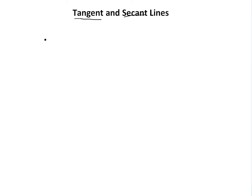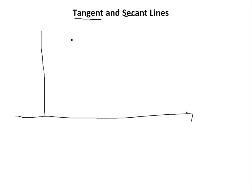We're going to look at tangent lines — I'll just show you what this is. Let's start off with just a random graph. Tangent lines are the exact same thing as the definition of a derivative, which you can see in my other video. Let's draw y and x axes and just draw a random curve.